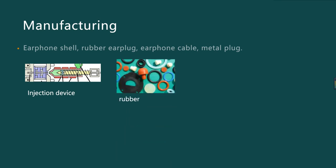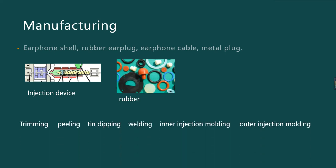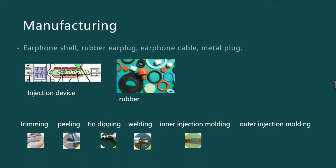Rubber earplugs are usually made of silica gel or memory foam material. The manufacturing method is to press rubber in a mold, then press it on a hydraulic press according to specified technological conditions after mold closing. The third step is to make a metal plug, which is made of plastic, brass, and copper tube. Finally, it is all assembled in turn, and the earphone is made by cutting, peeling off the head, dipping in tin, welding, and injection molding of the inner and outer containers.